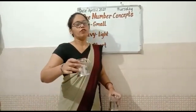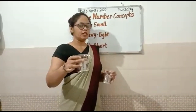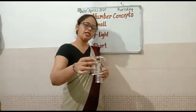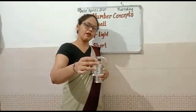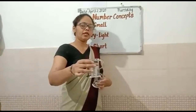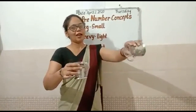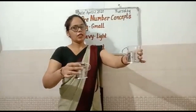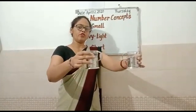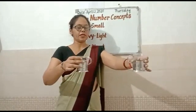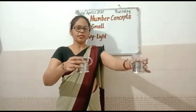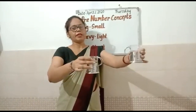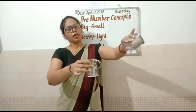Our next example is full and empty. This cup is full of water — full means bharaa hua. But this cup is empty — empty means khali. This cup is full of water and this cup is empty.